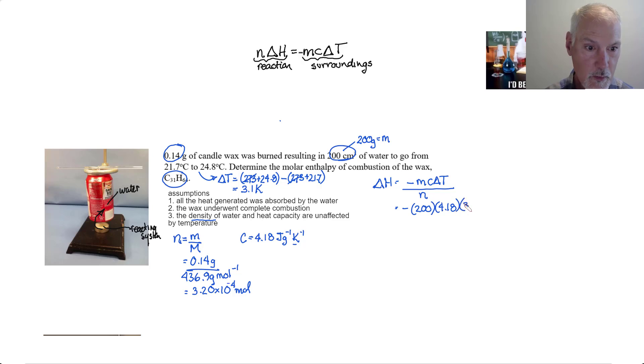So, I've got minus 200, 4.18, 3.1, and down on the bottom my 3.2 times 10 to the negative 4, and that comes out to 2 significant digits because this has 2 as does my number of moles have only 2 significant digits and we get negative